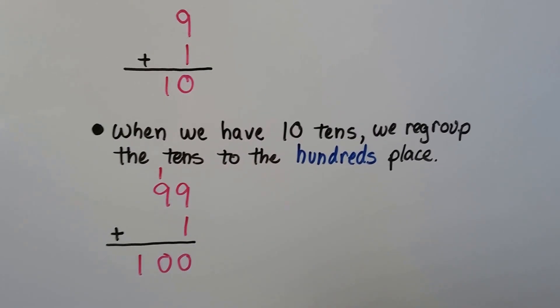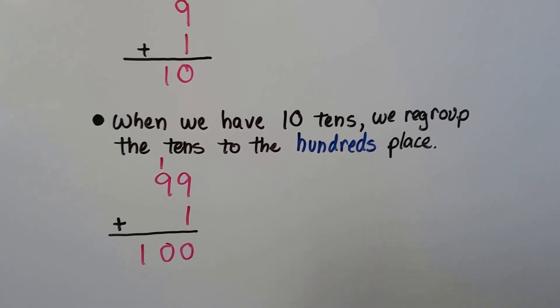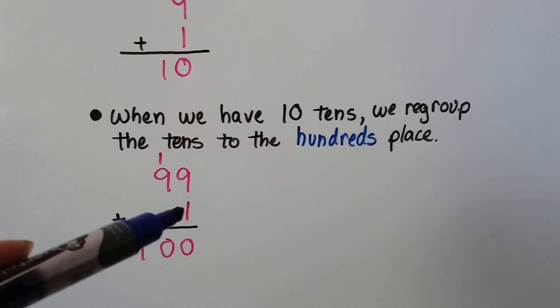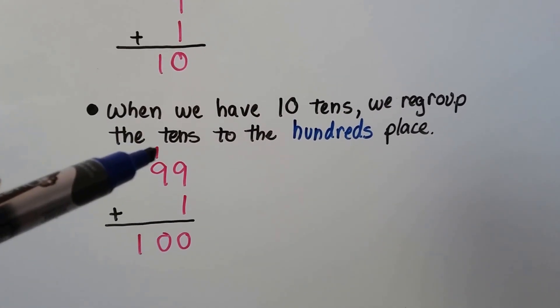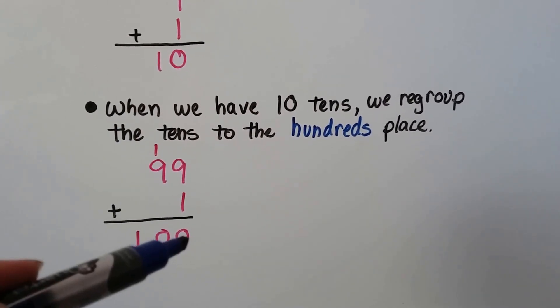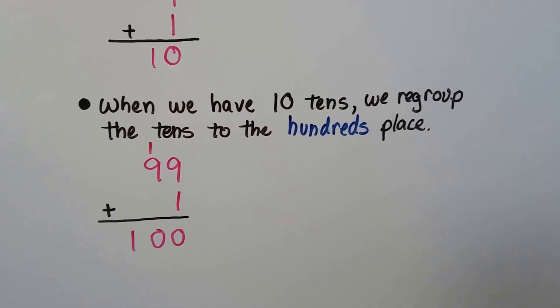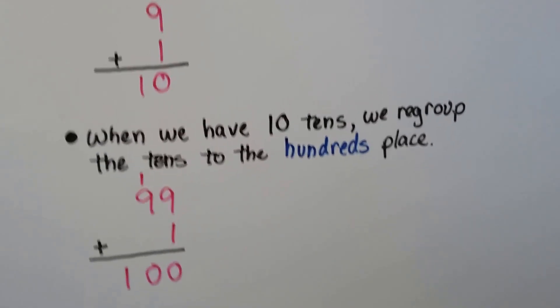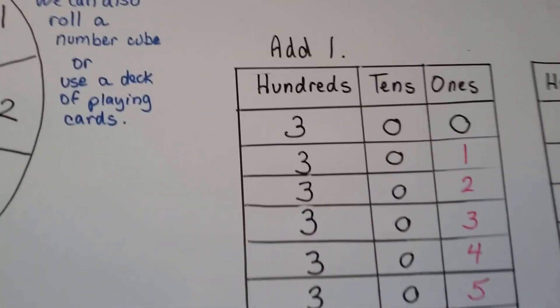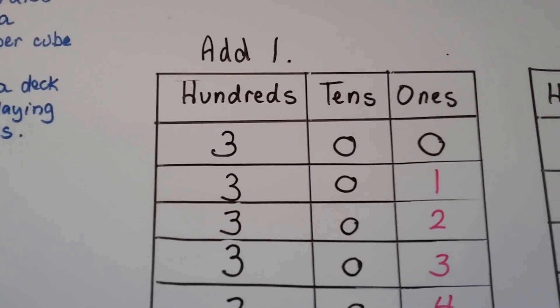When we have ten tens, we do the same thing — we regroup the tens to the hundreds place. Nine plus one is ten: we regroup the one up here and put zero down here. So ninety-nine plus one gives us one hundred.